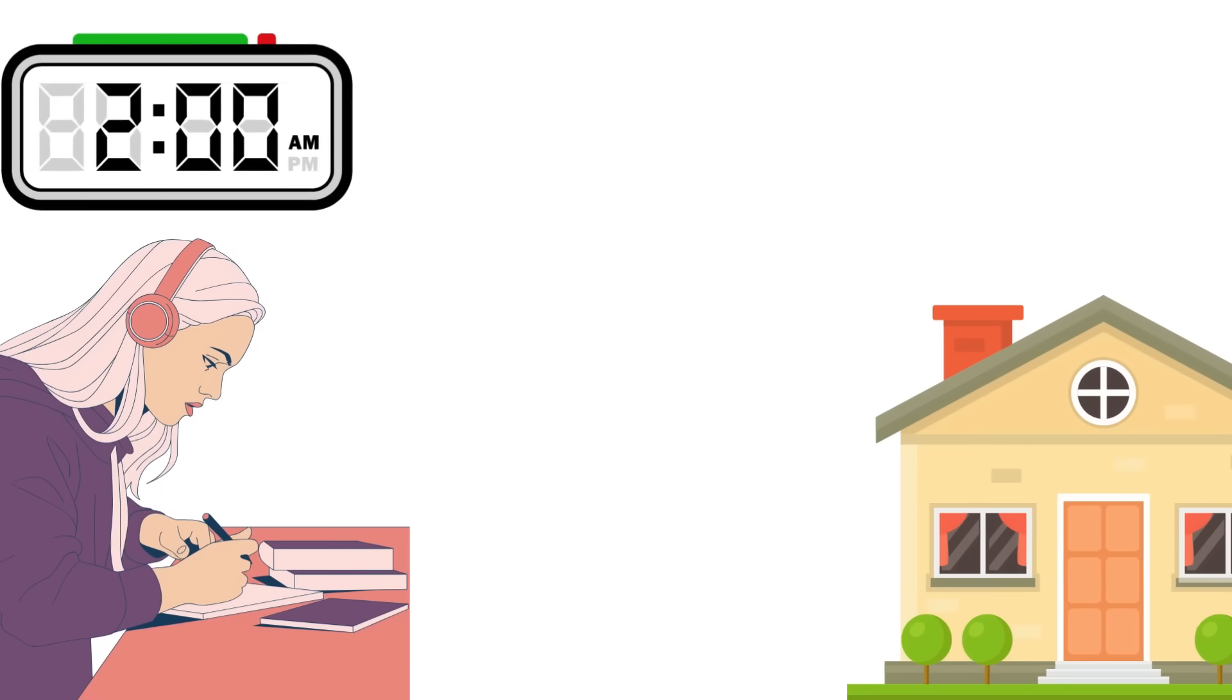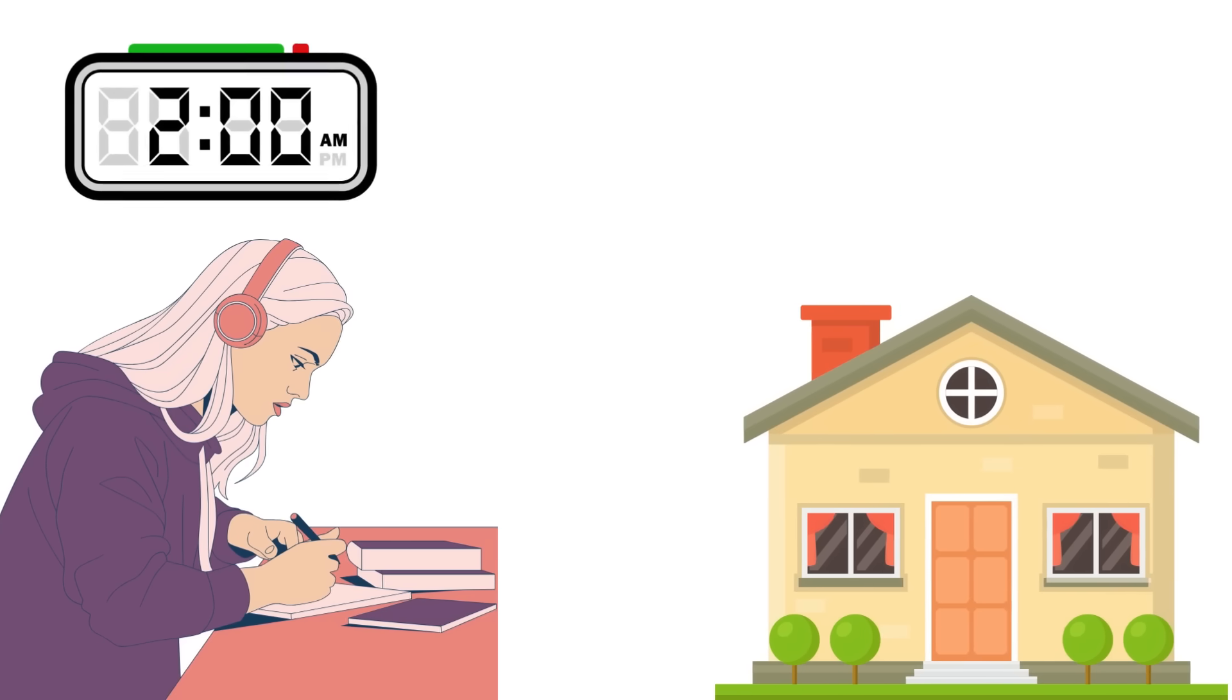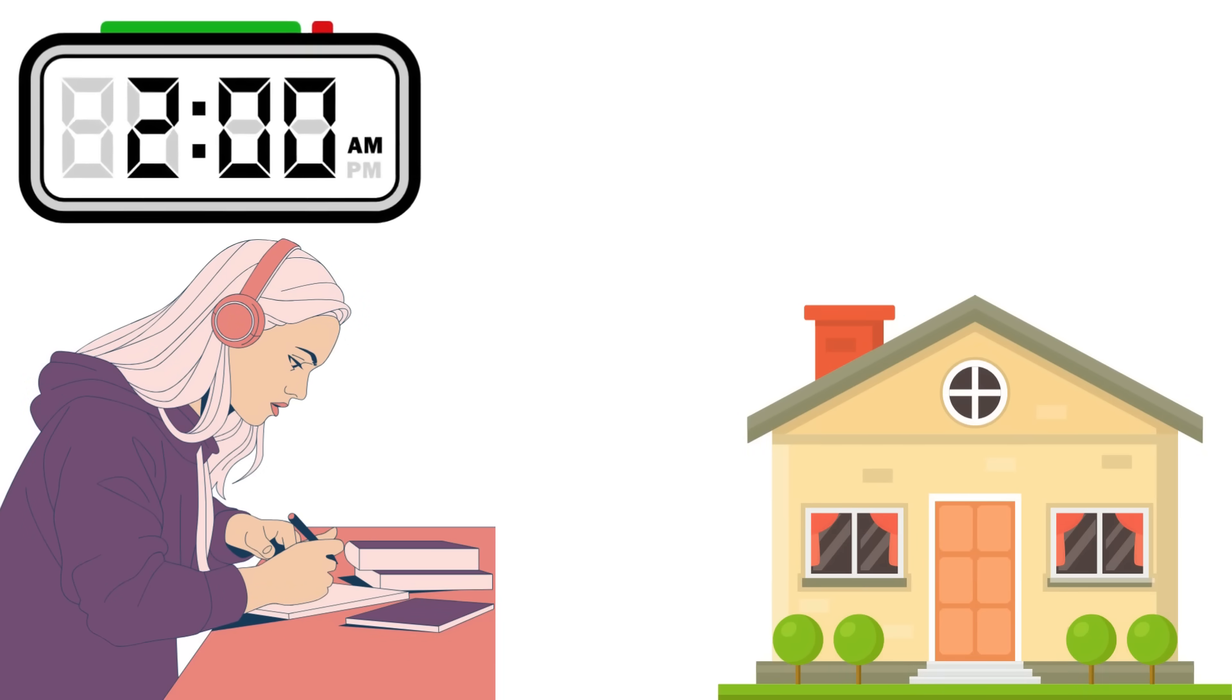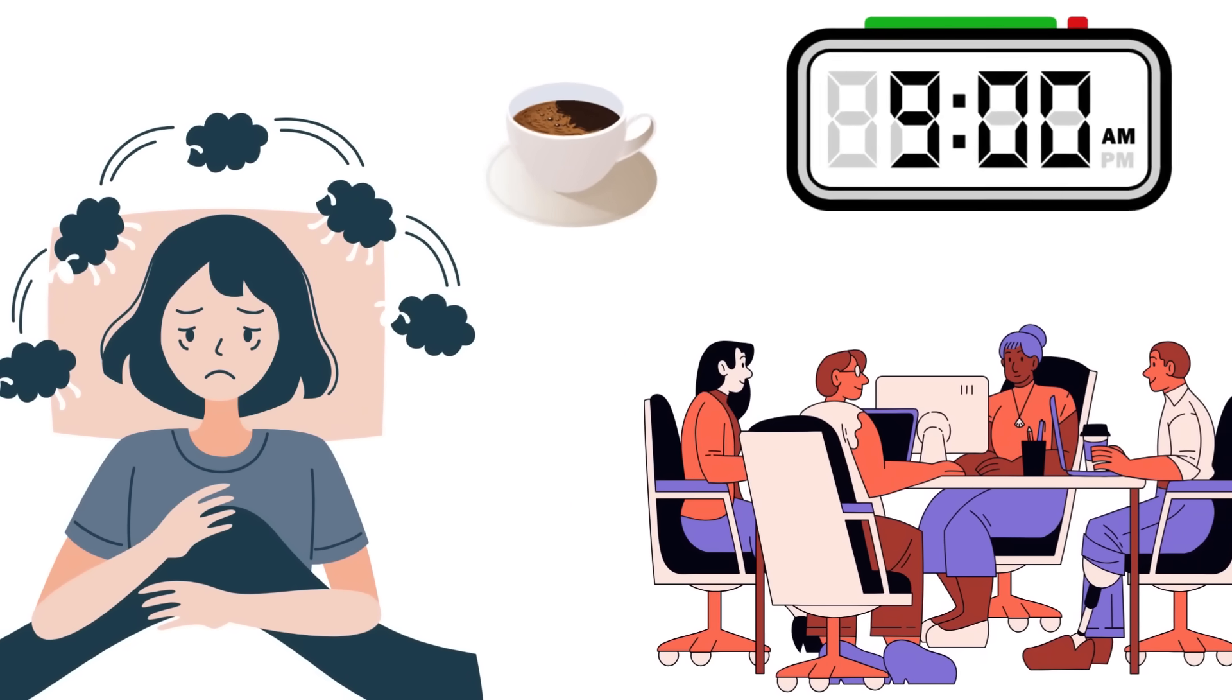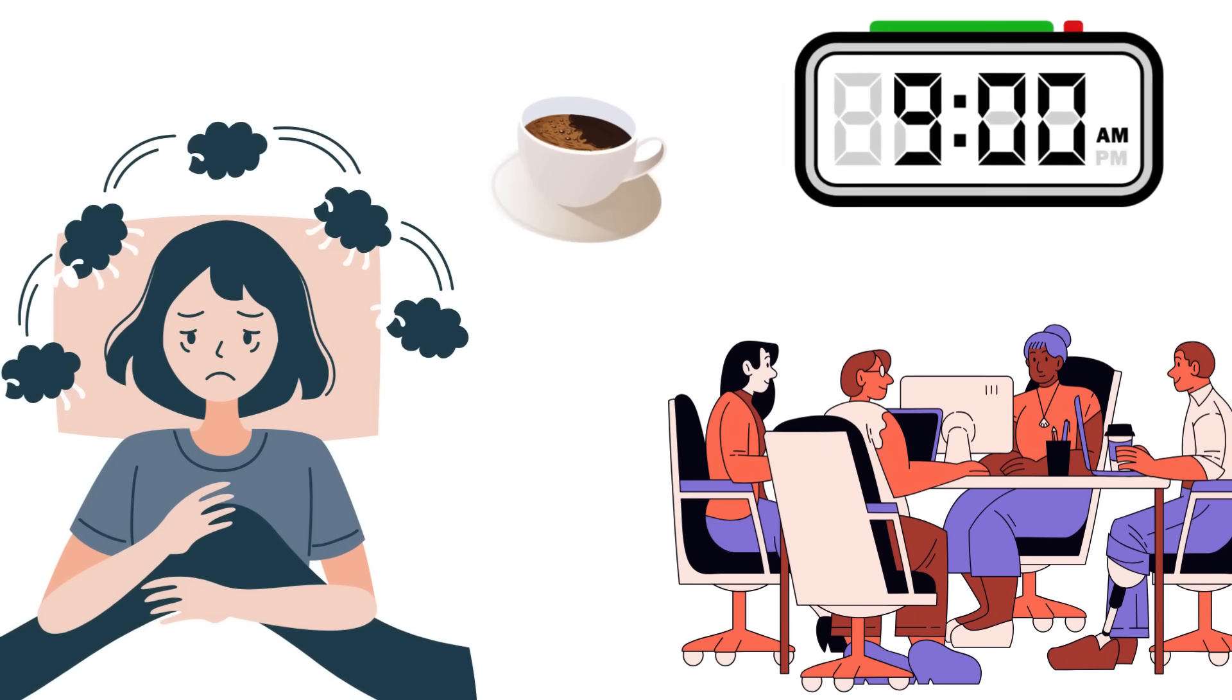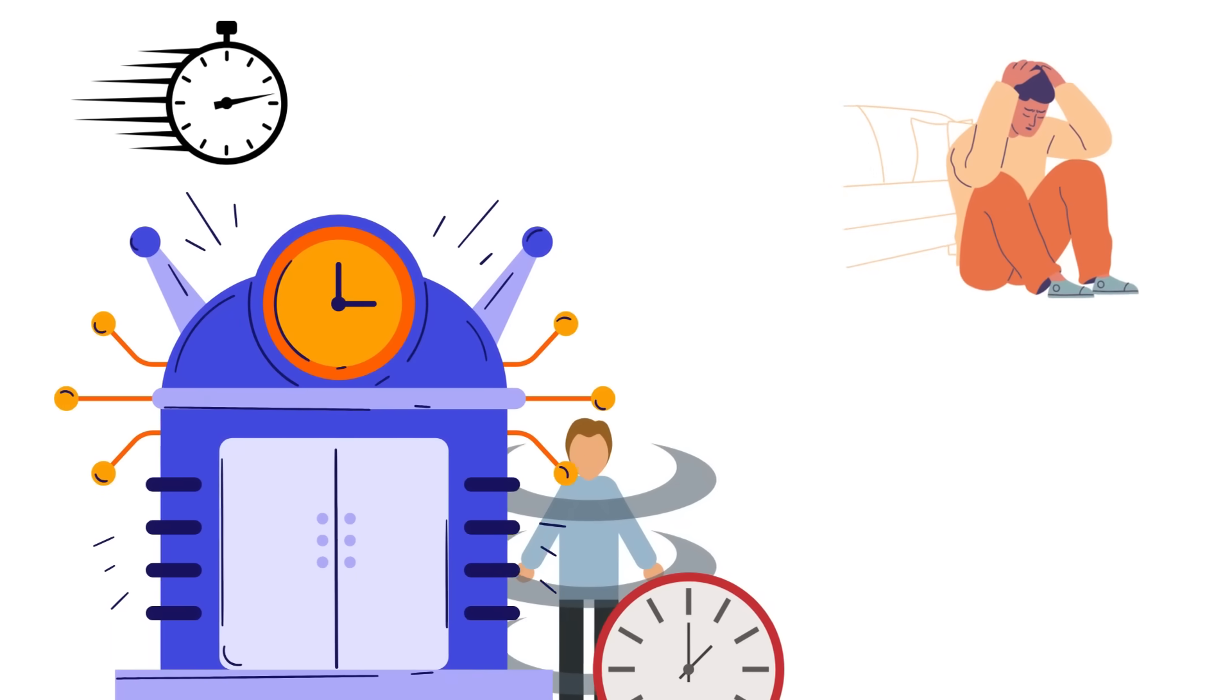Picture this. It's 2 a.m., and you're finally hitting your productivity stride. The house is quiet, the world is asleep, and you're cranking out your best work. Life is good. But then, the cruel reality of your 9 a.m. meeting comes crashing down, and suddenly you're facing a night of truncated sleep and a morning of caffeine-fueled desperation. This, my friends, is what researchers call social jet lag, the misalignment between your body's natural rhythms and the demands of society.